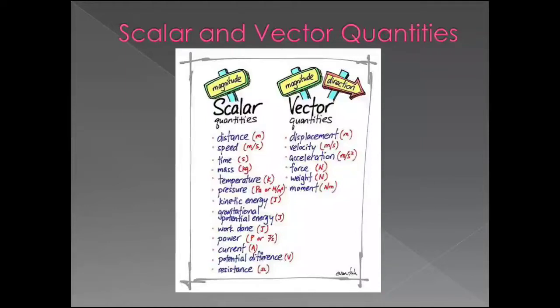Vector quantities. The physical quantities which have both magnitude as well as the sense of direction are called vector quantities. For example, force, work done, acceleration, etc.